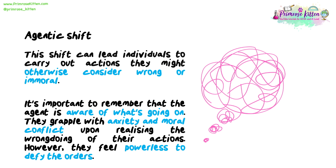It's important to remember that the agent is aware of what's going on. They grapple with anxiety and moral conflict upon realising the wrongdoing of their actions. However, they feel powerless to defy the orders.